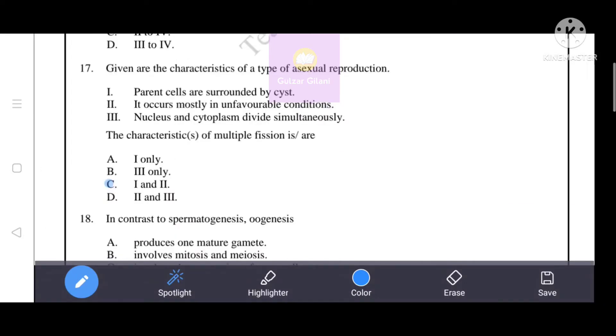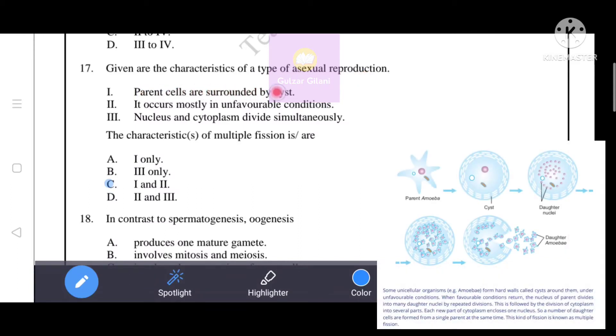Next question. Given are the characteristics of a type of asexual reproduction: one, parent cells are surrounded by cysts; it occurs mostly in unfavorable conditions; nucleus and cytoplasm divide simultaneously. The characteristics of multiple fission are one and two, that's why the correct answer is option C. Option C is the correct answer.